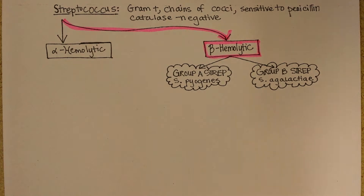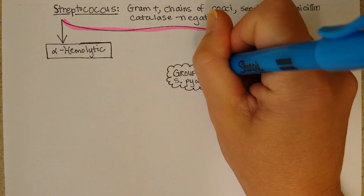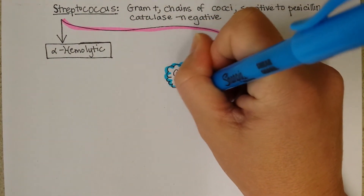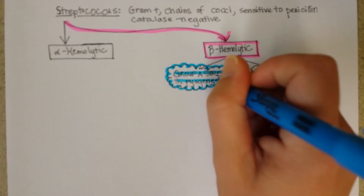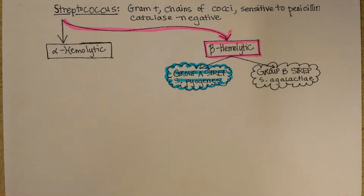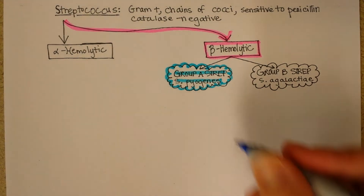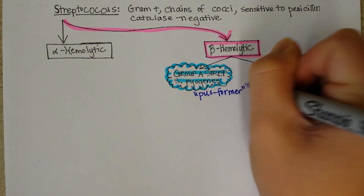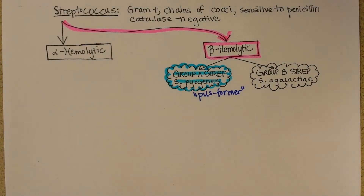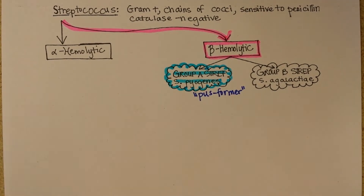First we'll look at group A strep, sometimes called GAS, and group A strep is what you know of for causing strep throat. It can cause other infections as well. Its name pyogenes literally means pus former, and anyone that's had strep throat or seen it knows that you can see patches of pus — white blood cells and dead bacteria on the back of the throat — and those sores are quite painful.